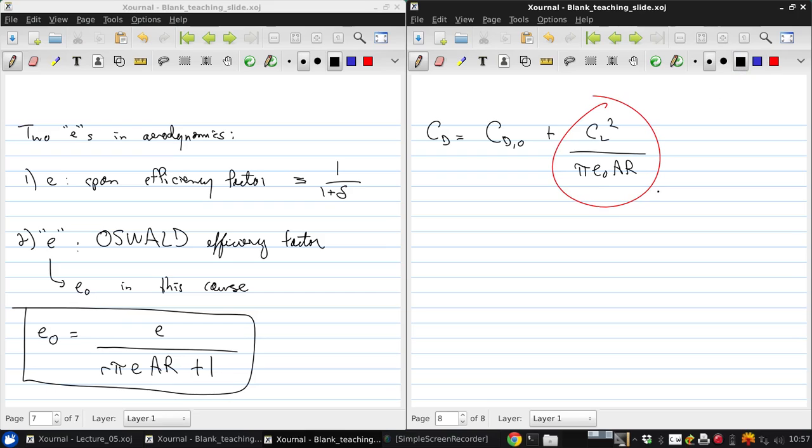This second term includes both induced drag and parasitic drag that's due to lift. Another way you can kind of tell these numbers apart, the two e's, is by their values. So e_O is usually something like about 0.7 to 0.85, and this applies to the entire aircraft. Whereas the span efficiency factor is usually between 0.9 and 1, and that applies to the wing. Aircraft versus wing.